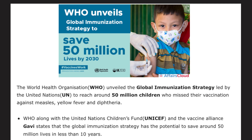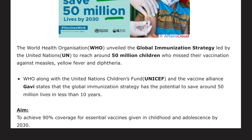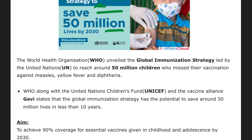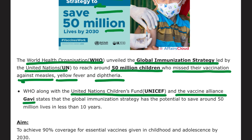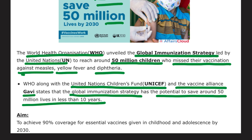The World Health Organization unveiled a global immunization strategy to save 50 million lives by 2030. The WHO used the strategy to reach around 50 million children who missed their vaccination against measles, yellow fever, and diphtheria. WHO, along with UNICEF and the vaccine alliance Gavi, stated that the global immunization strategy has the potential to save around 50 million lives in less than 10 years. The aim is to achieve 90% coverage for essential vaccines given in childhood and adolescence by 2030.